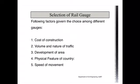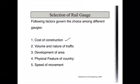The factors governing the choice of gauge include: cost of construction, volume and nature of traffic, development of the area, physical features of the country, and speed of movement. Regarding cost of construction — whenever you change the rail gauge, the cost of construction increases only marginally. The cost of building bridges, culverts, tunneling, etc. remains roughly the same regardless of gauge type.